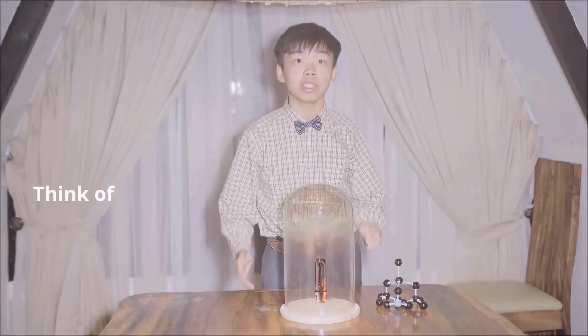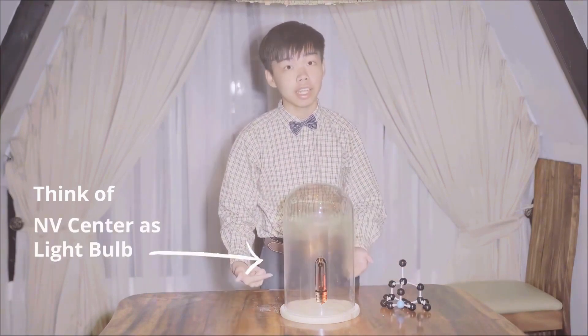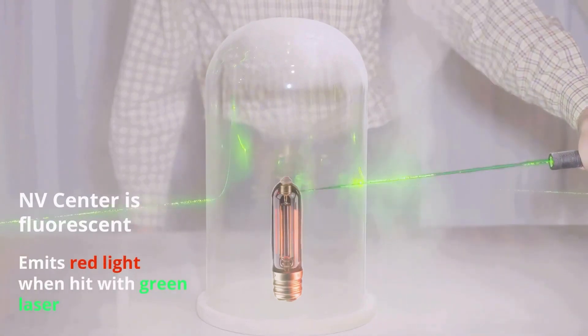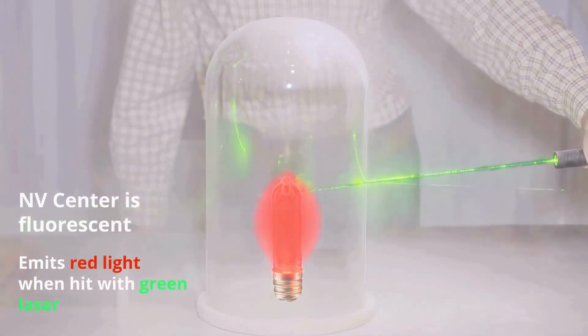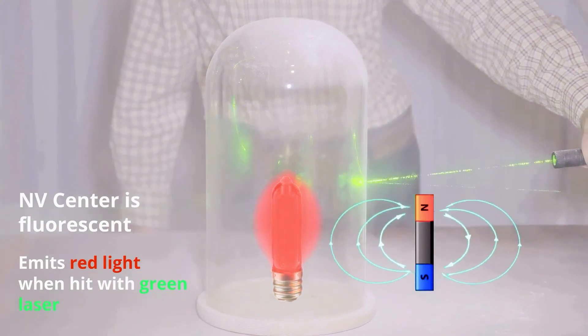Think of a diamond's quantum sensor like a glass dome with the NV Center as a bulb inside of it. Then shine a green laser beam at the bulb and bright red comes out. But when the NV Center senses nearby magnetic fields, that red glow gets dimmer.